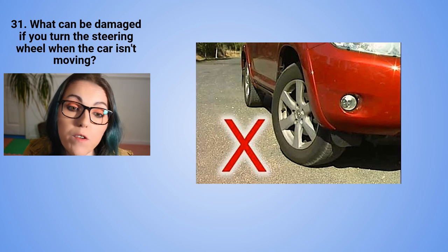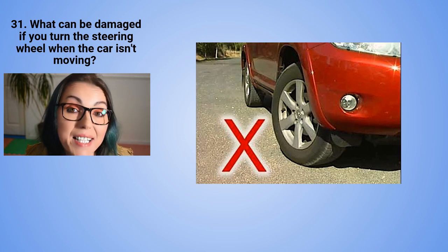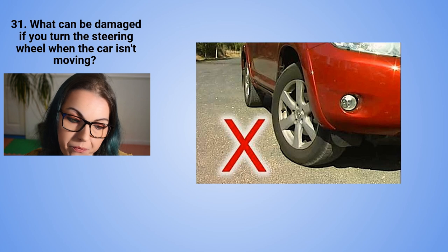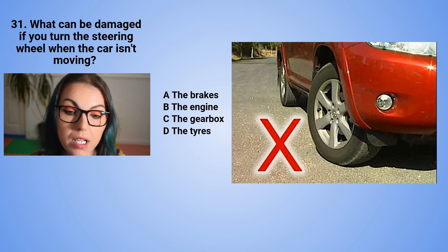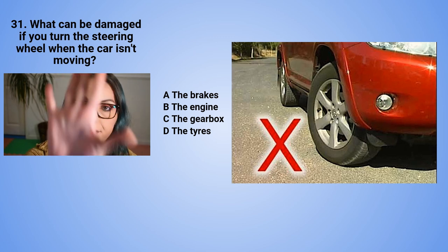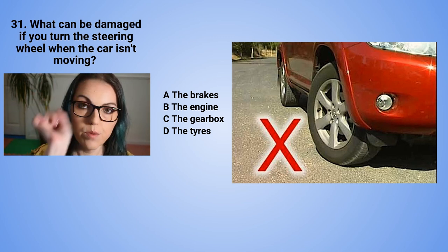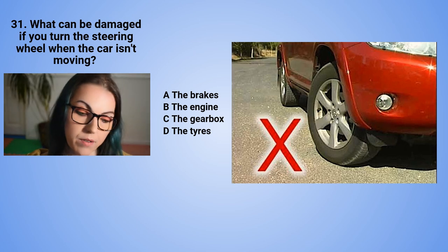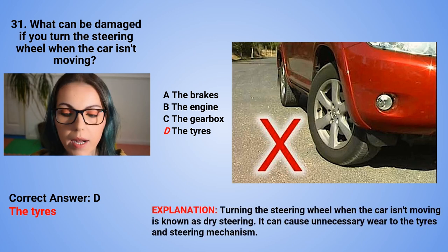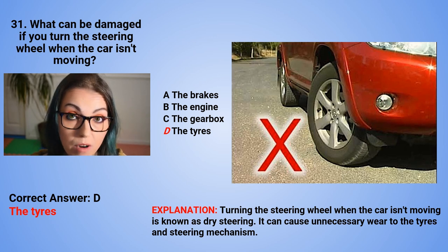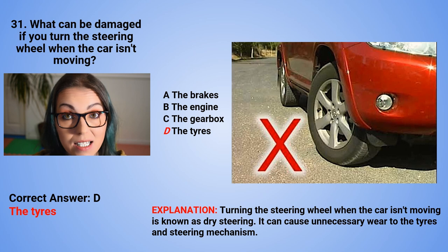Question 31: What can be damaged if you turn the steering wheel when the car is not moving? A. The brakes. B. The engine. C. The gearbox. Or D. The tyres. The correct answer is D — the tyres. Turning the steering wheel when the car is not moving is known as dry steering. It can cause unnecessary wear to the tyres and the steering mechanism.